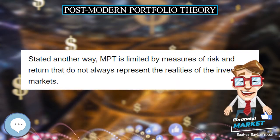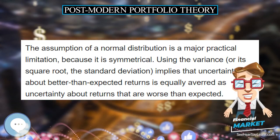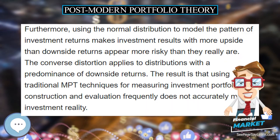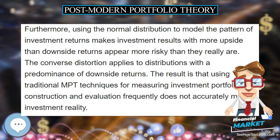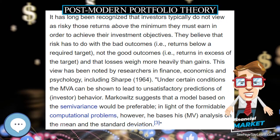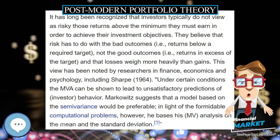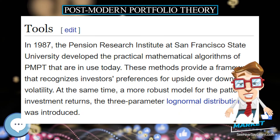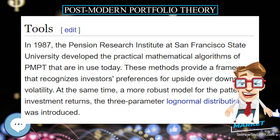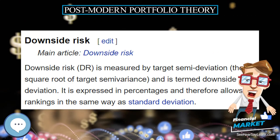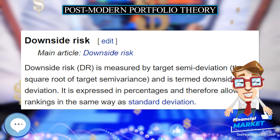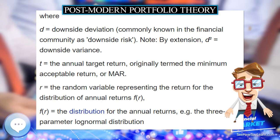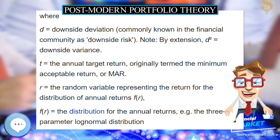Two major limitations of MPT are its assumptions. Stated another way, MPT is limited by measures of risk and return that do not always represent the realities of the investment markets. The assumption of a normal distribution is a major practical limitation because it is symmetrical. Using the variance, or its square root, the standard deviation, implies that uncertainty about better-than-expected returns is equally averred as uncertainty about returns that are worse than expected. Furthermore, using the normal distribution to model the pattern of investment returns makes investment results with more upside-than-downside returns appear more risky than they really are.